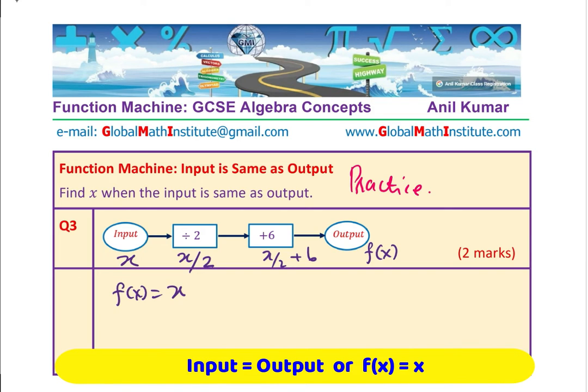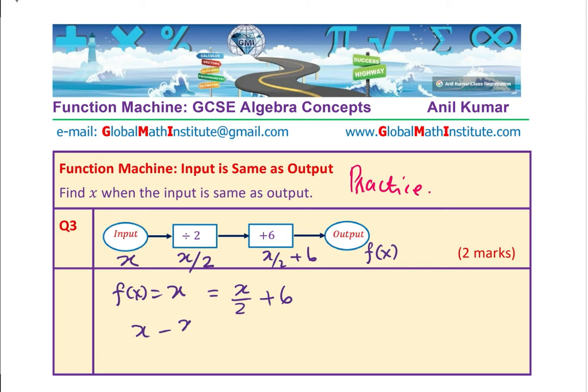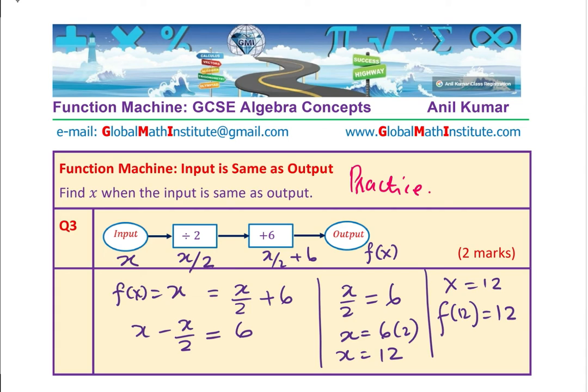Now we have f of x which should be equal to x by 2 plus 6. Both x and f of x are equal. So we should solve for x. Let's do the solution. Bringing x by 2, this time to the left, we get x minus x by 2 equals to 6 and that gives us x by 2 equals to 6, or x is equal to 6 times 2 which is 12. We know for x equals to 12, f of 12 will be 12. That is what this particular solution is. You see how conveniently we are in a position to write the solution in terms of function notation.